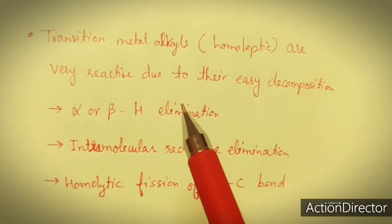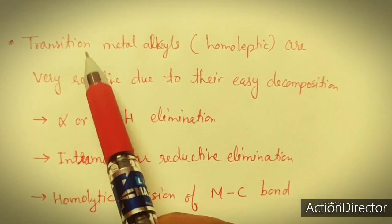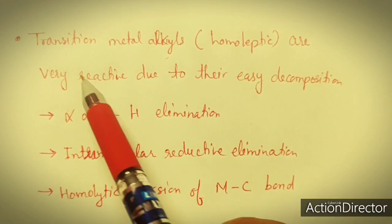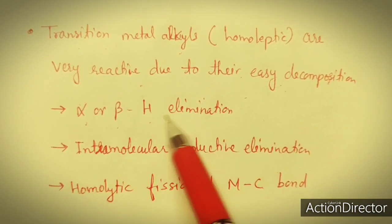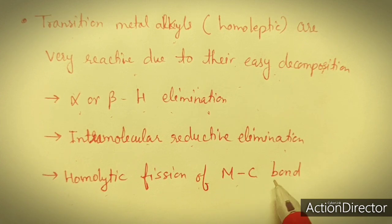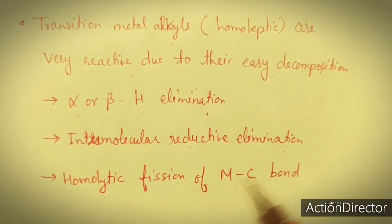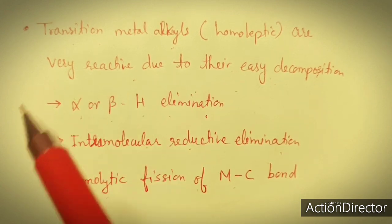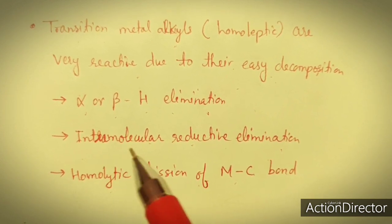What is the reason for the reactivity or instability of this kind of transition metal compound? This category involves transition metal alkyls, where the organic molecule is generally an alkyl group. They are very reactive because of their easy decomposition. The decomposition may occur due to alpha or beta hydride elimination, intramolecular reductive elimination, or homolytic fission of the M-C bond. These are the main reasons why homoleptic transition metal alkyls are unstable or very reactive. The full story regarding decomposition pathways of transition metal alkyls will be covered in a later lecture of this series.